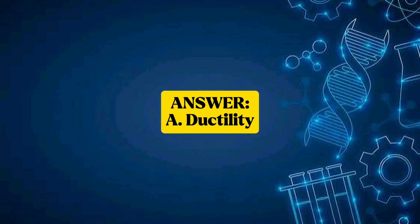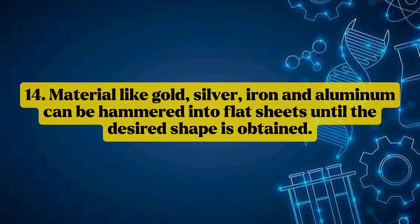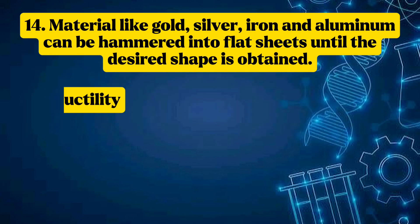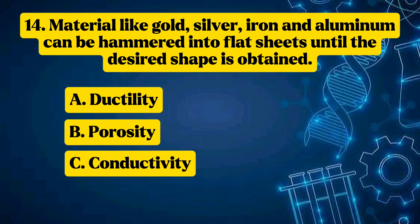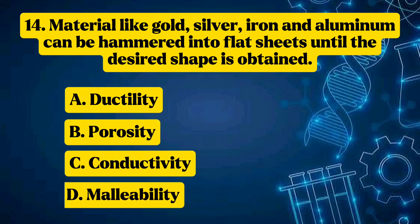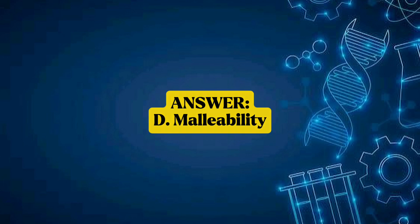Question 14: Materials like gold, silver, iron, and aluminum can be hammered into flat sheets until the desired shape is obtained. Options: A — ductility, B — porosity, C — conductivity, D — malleability. Answer: D — Malleability.